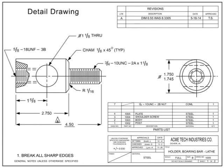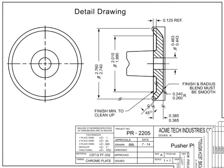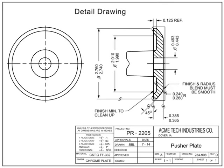A machine drawing details all the information required to take raw material and turn it into a finished part. The machining tolerances, material, finishes, etc. are all shown on the detail drawing. Machine drawings are detail drawings that require machining to create the end product.